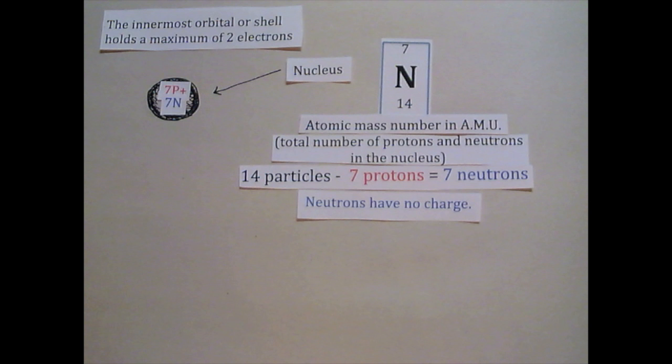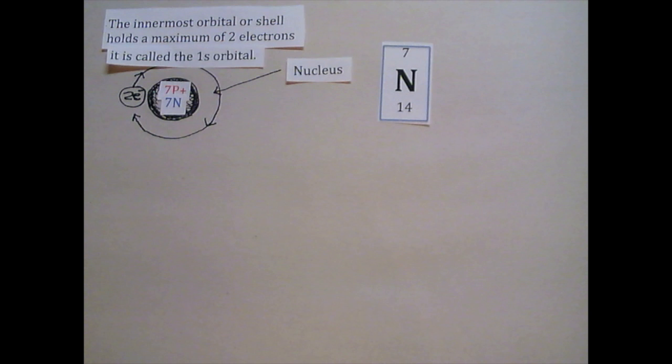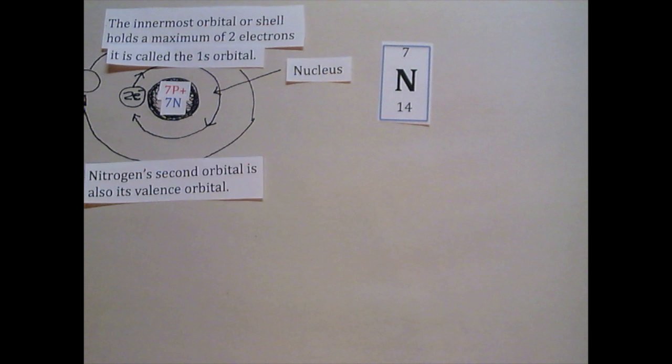Next we draw the innermost electron orbital, or shell. It can only hold 2 total electrons and is called the 1s orbital. The next orbitals are called the 2s and 2p orbitals. The second orbital is also nitrogen's valence orbital.